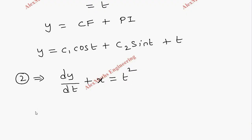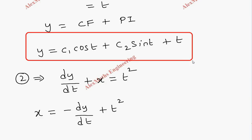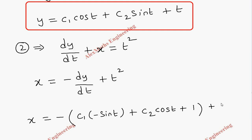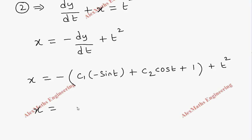From the second equation, taking dy/dt to the other side gives x equal to minus dy/dt plus t squared. Differentiating y gives: derivative of c1·cos(t) is minus c1·sin(t), derivative of c2·sin(t) is c2·cos(t), and derivative of t is 1. Taking the minus sign inside, we get x equal to c1·sin(t) minus c2·cos(t) plus t squared minus 1.